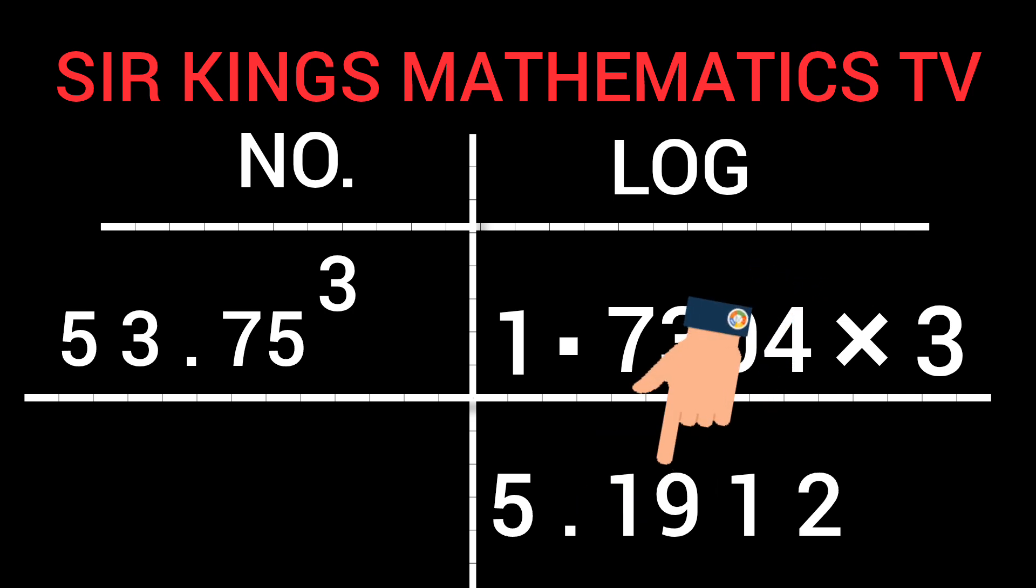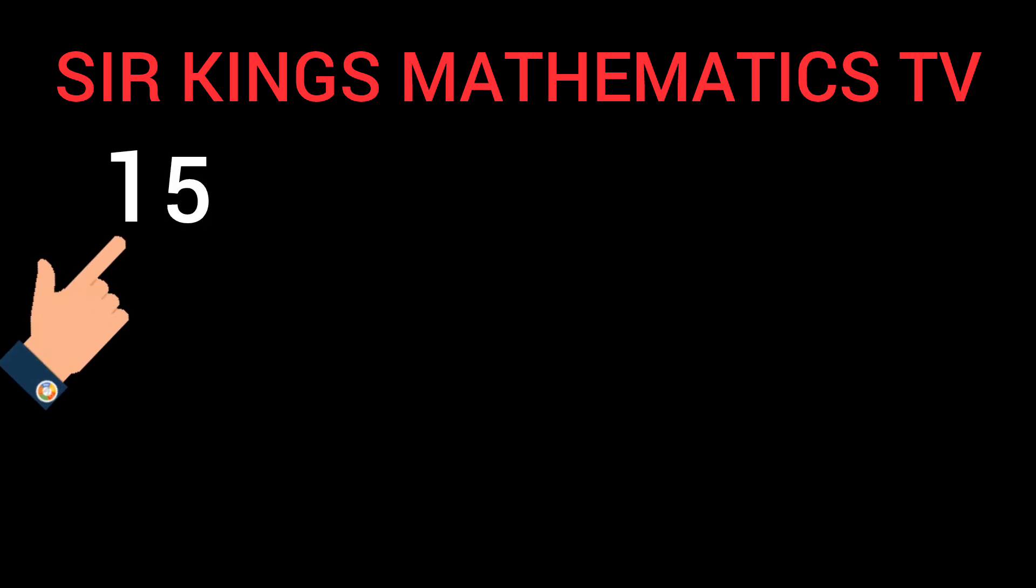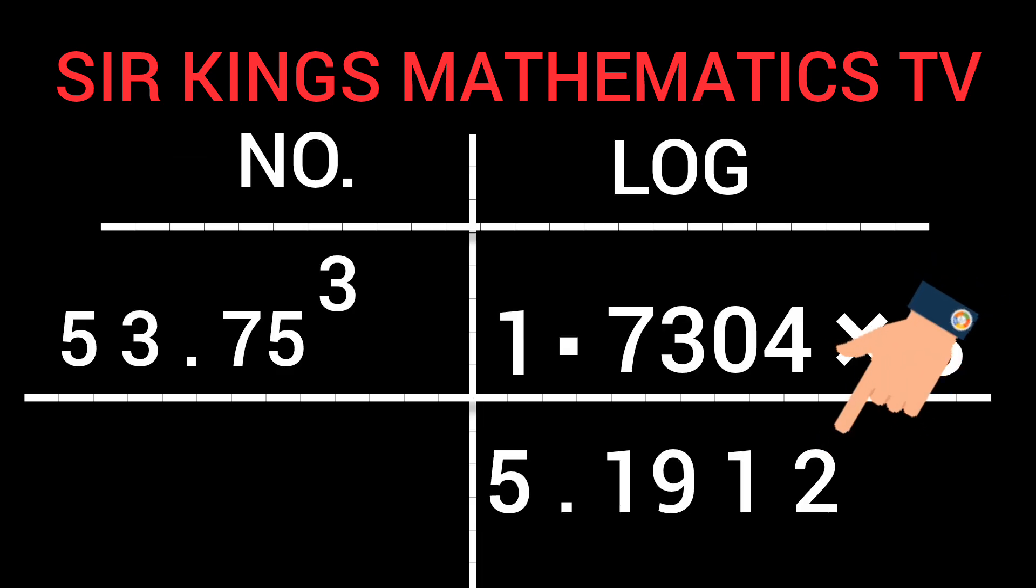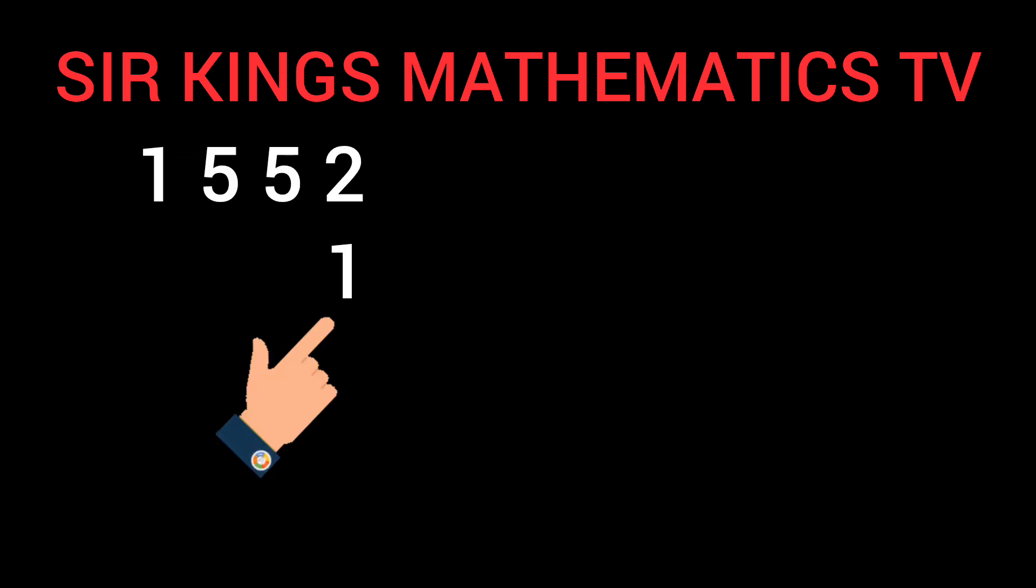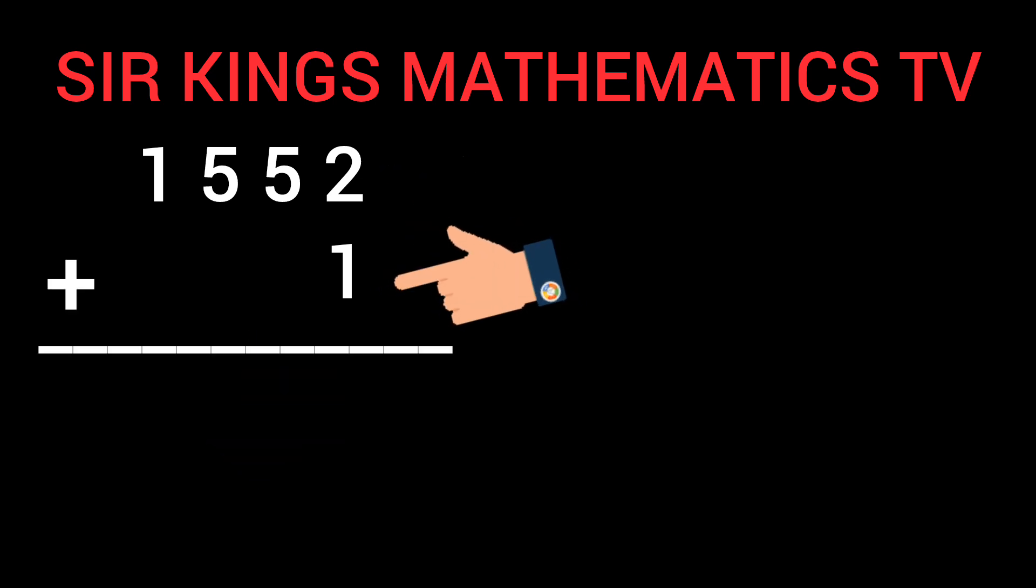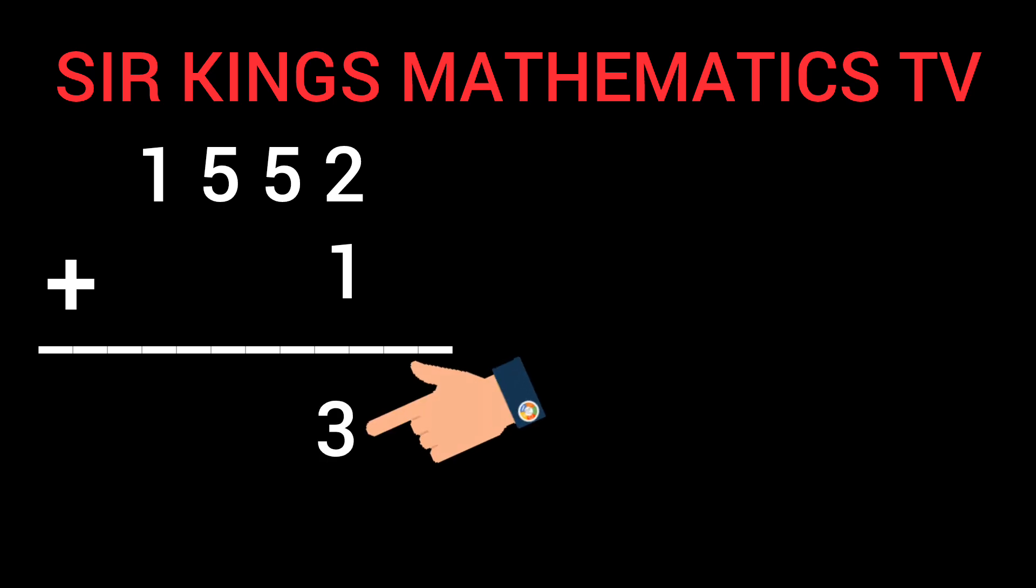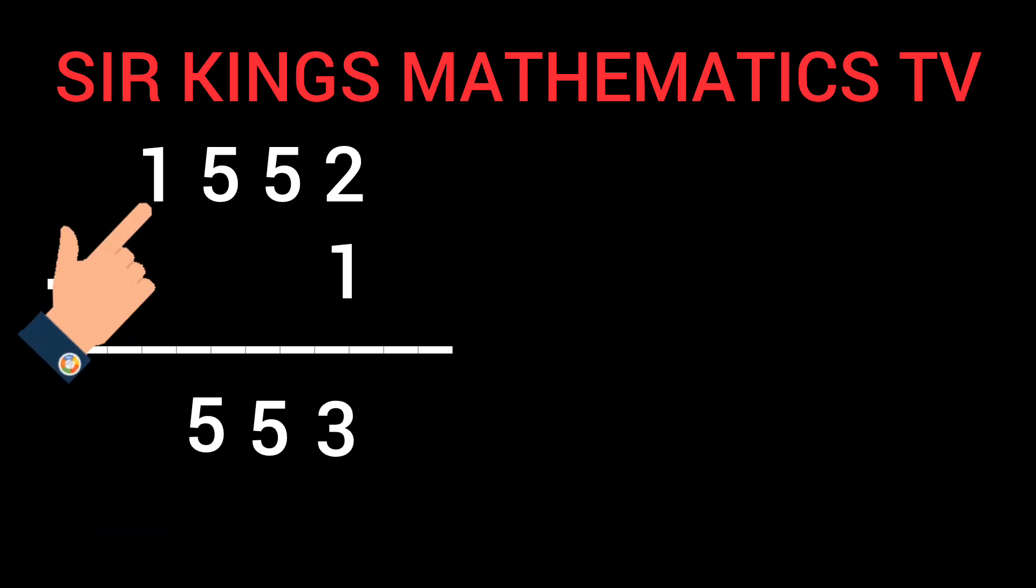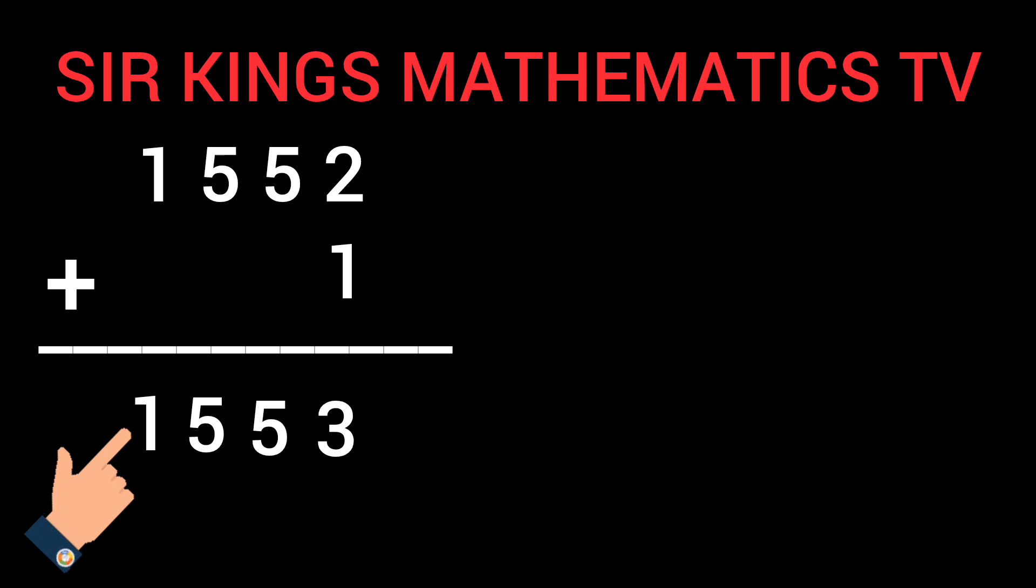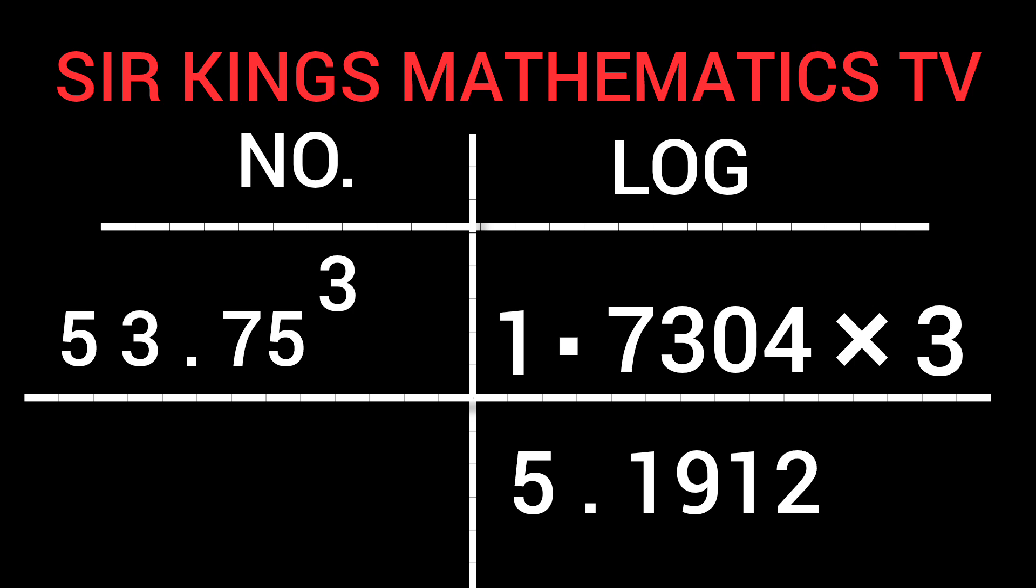0.19 under 1 will give us 1.5, 5, 2. Difference 2 will give us 1. Now, add 2 plus 1 will give us 3. Bring down 5, bring down 5, bring down 1. Our antilog is 1, 5, 5, 3. Write it down here.